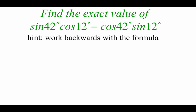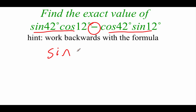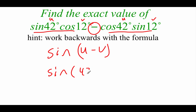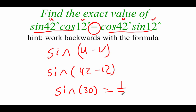In this example we're using our formula to work backwards. We have sine of 42 times cosine of 12 minus cosine of 42 times sine of 12. What I see is a sine times a cosine minus a cosine times a sine — that looks like the sine difference formula for U minus V. Our U value is 42 and our V value is 12. Replacing those, we get sine of 42 minus 12, which is the sine of 30, and the sine of 30 from the unit circle is 1/2.